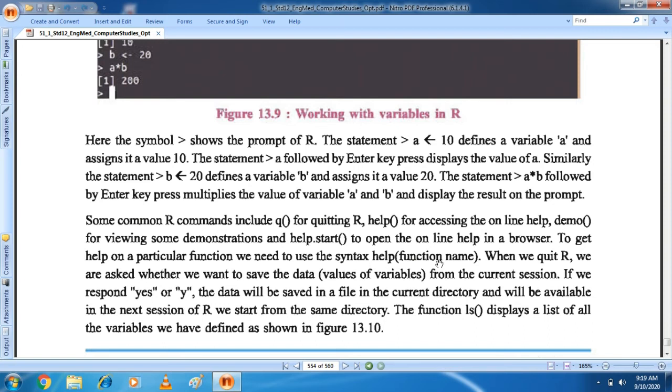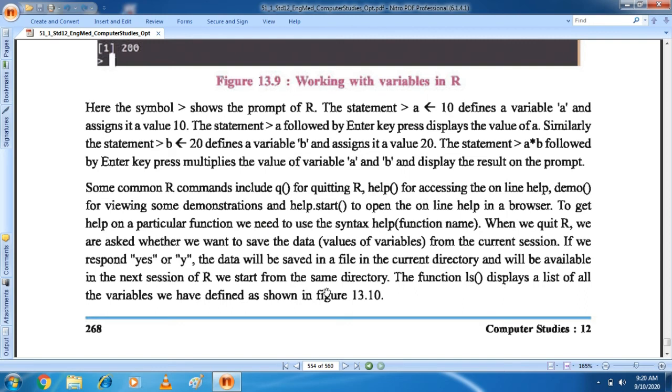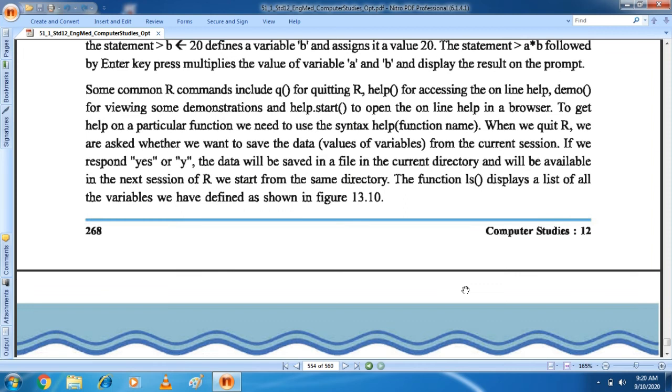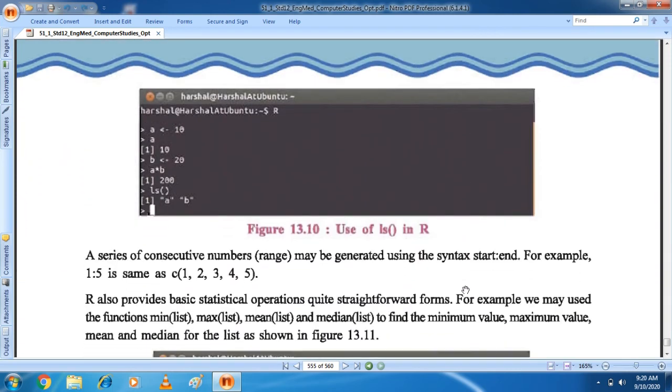To get help on a particular function, we need to use the syntax help function. When we quit R, we are asked whether we want to save the data values of variables from the current session. If we respond yes or Y, the data will be saved in the current directory and will be available in the next session of R. We start from the same directory, it will be saved. And next time R software will start in the next session from the same directory.